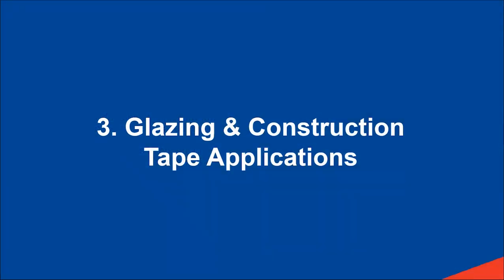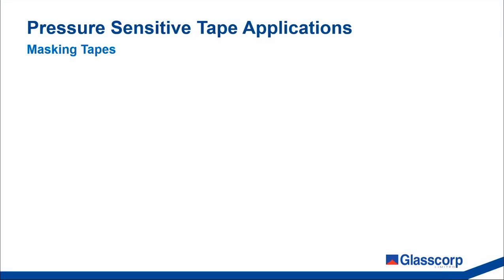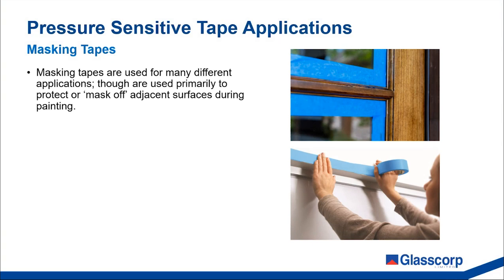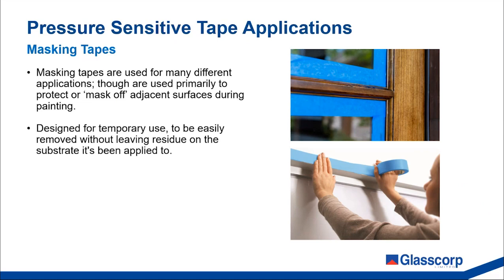In this next section we will look at a few of the common applications where tapes are used, particularly as it relates to the glazing and construction industries. Masking tapes are used for many different applications, though they're primarily used to protect or mask off surfaces during painting — which is why they're often referred to as painter's tape. Masking tapes are designed for temporary use, to be easily removed without leaving residue or damaging the substrate they've been applied to.